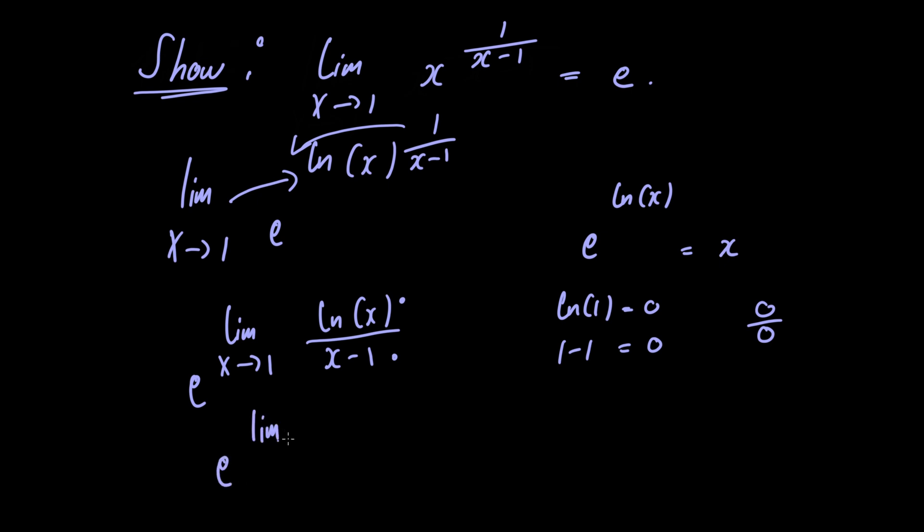So we have e raised to the limit as x approaches 1 of 1 over x divided by 1. Now if we just multiply the numerator by x and the denominator by x, this simplifies to e raised to the limit as x approaches 1 of 1 over x.